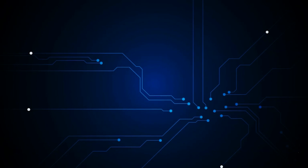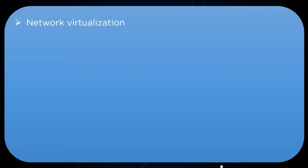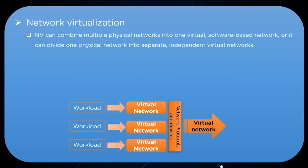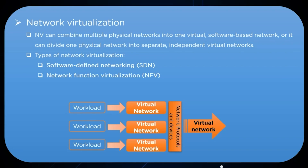In network virtualization, software creates a virtual instance of the network that can be managed from a single console. It forms an abstraction of hardware components and functions — including switches, routers, and more — simplifying network management. The two types are software-defined virtualization, which virtualizes hardware controlling network traffic routing, and network function virtualization (NFV), which virtualizes hardware appliances providing network-specific functions such as firewalls, making them easier to configure and manage.